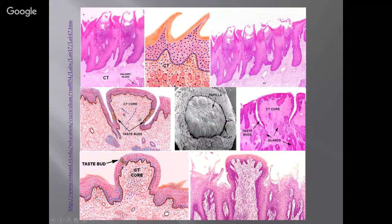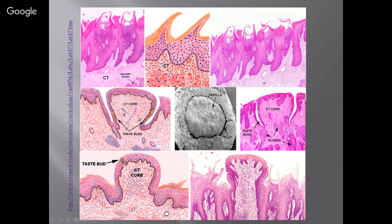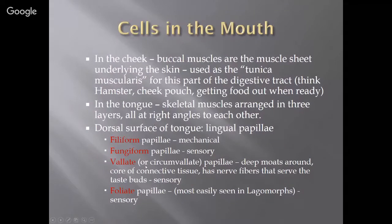Here are pictures of these papillae. The filiform are mechanical and look like filaments — they're thinner. The valate has a connective tissue core with deep moats or valleys within the papillae, and the taste buds are on the side. Here's a papilla with the moat and connective tissue core, and another with a taste bud on top. So we have filiform, fungiform — think mushrooms — valate, and foliate.